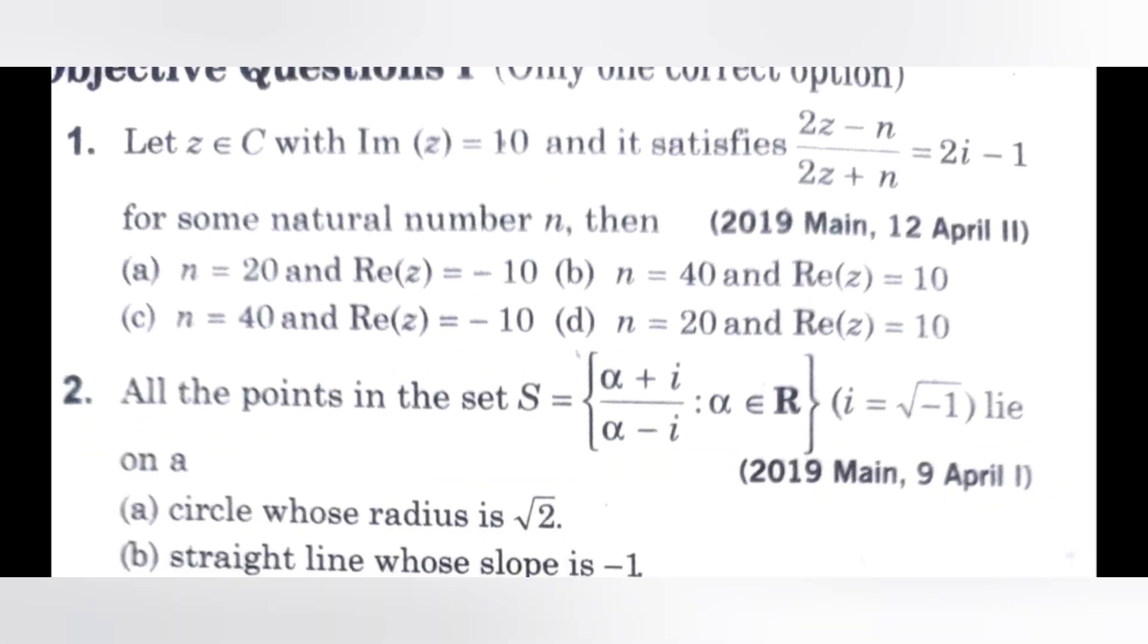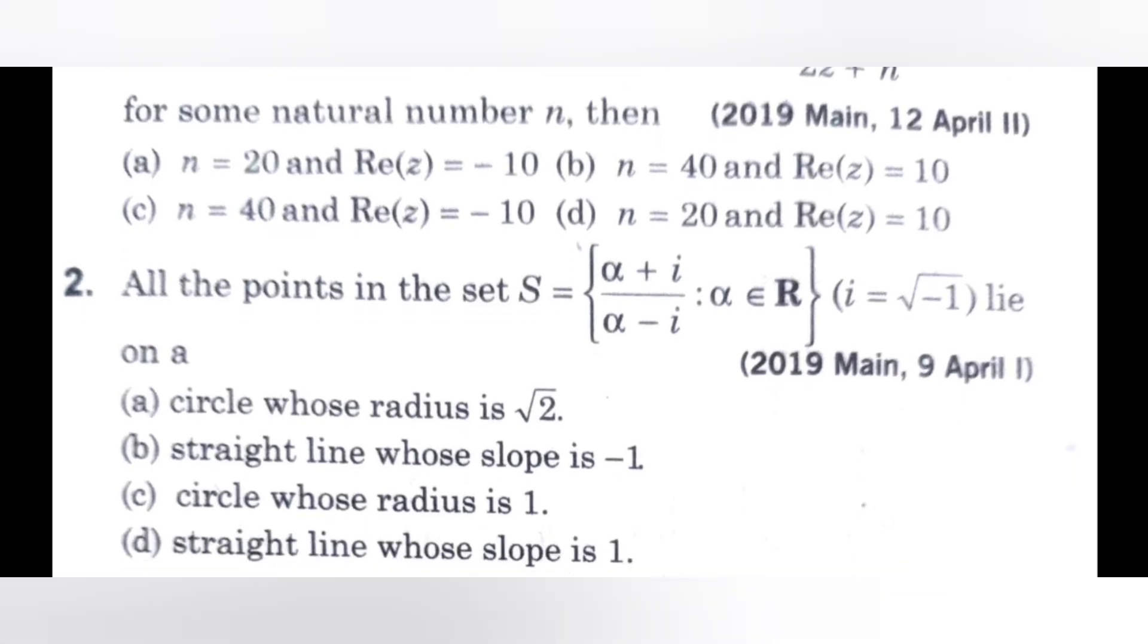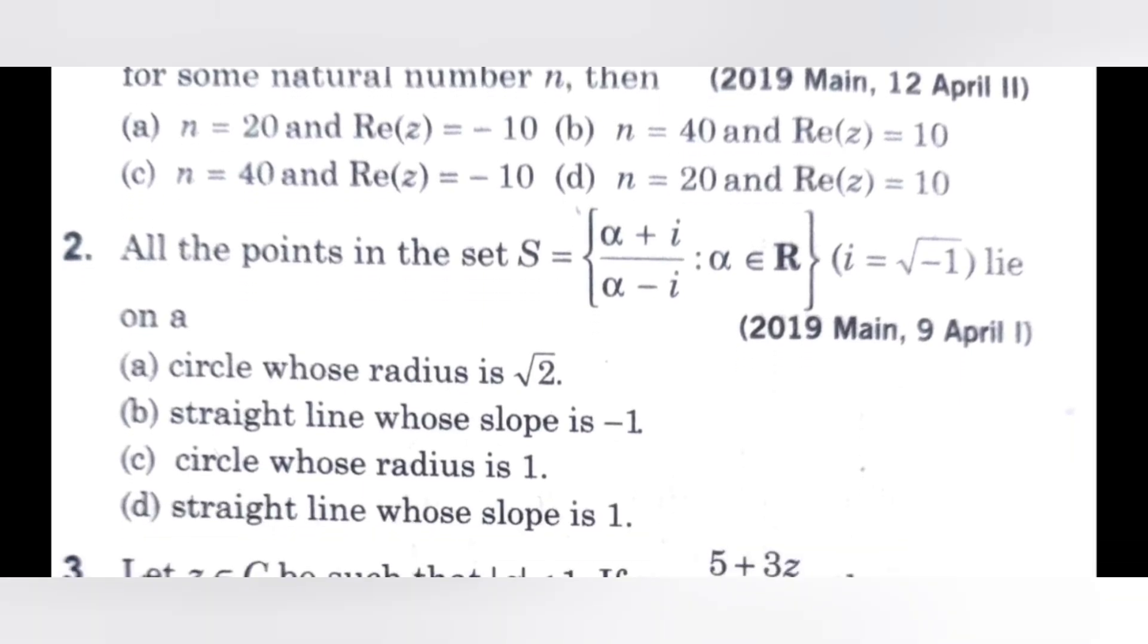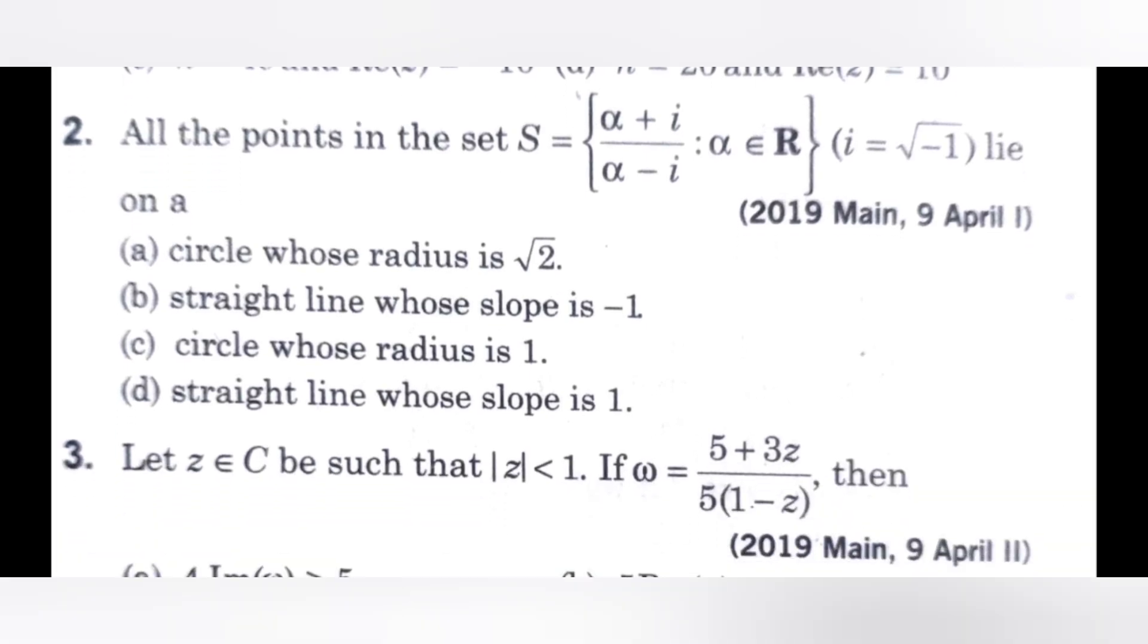Next, second question. All the points in the set S equals alpha plus i divided by alpha minus i, such that alpha belongs to R, where i equals root minus 1, lie on: check the options. Does it lie on a circle or straight line, circle whose radius is 1, or straight line whose slope is 1?